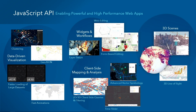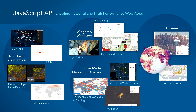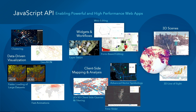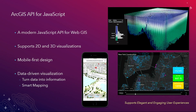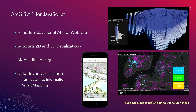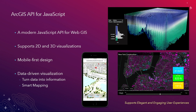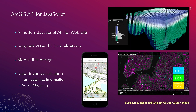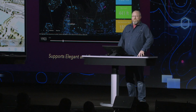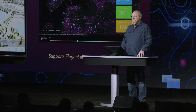The mapping is powered by the JavaScript API. It enables powerful and high-performance web applications for data-driven visualization, client-side mapping and analysis, and 3D scenes with powerful widgets and workflows. It's a modern JavaScript API for your web GIS. It supports 2D and 3D visualizations, mobile-first design, and data-driven visualization — turning raw data into useful geographic information. It also has the tools to let others explore and make maps with smart mapping.